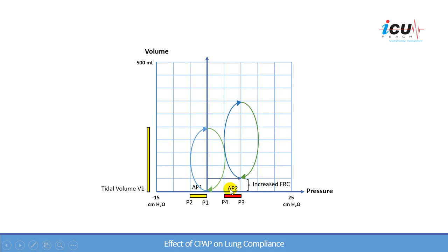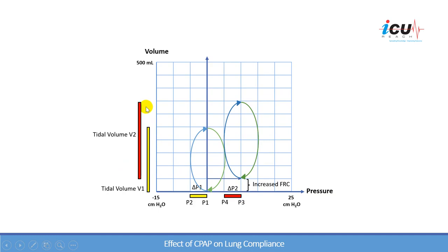As a result of this change in pressure, there is a gradient between the tracheal pressure and the alveolar pressure. This will result in inspiratory flow that produces a larger tidal volume compared to the first case. Since the lung is recruited, the patient is able to generate a larger tidal volume with the same pressure — a total of 300 ml, an increase of 50 ml of inspiratory volume.